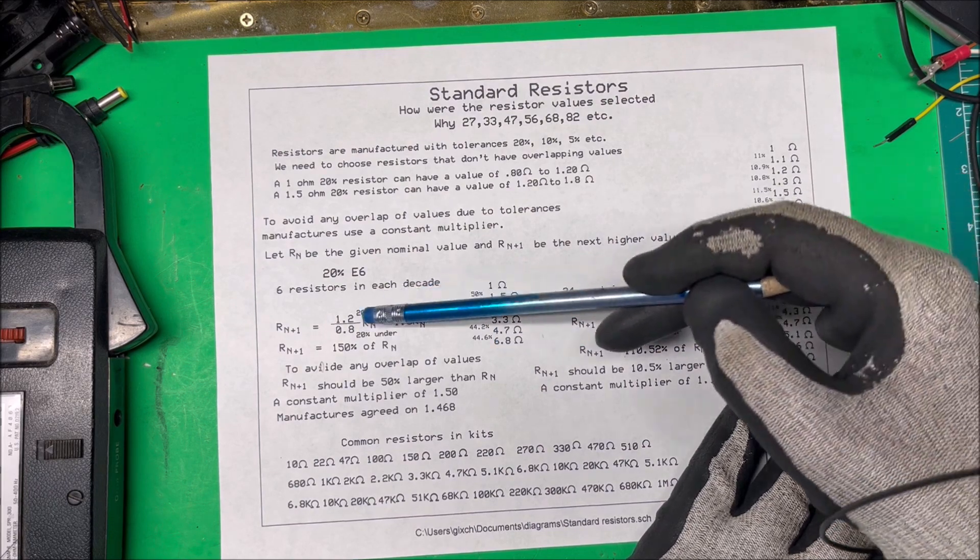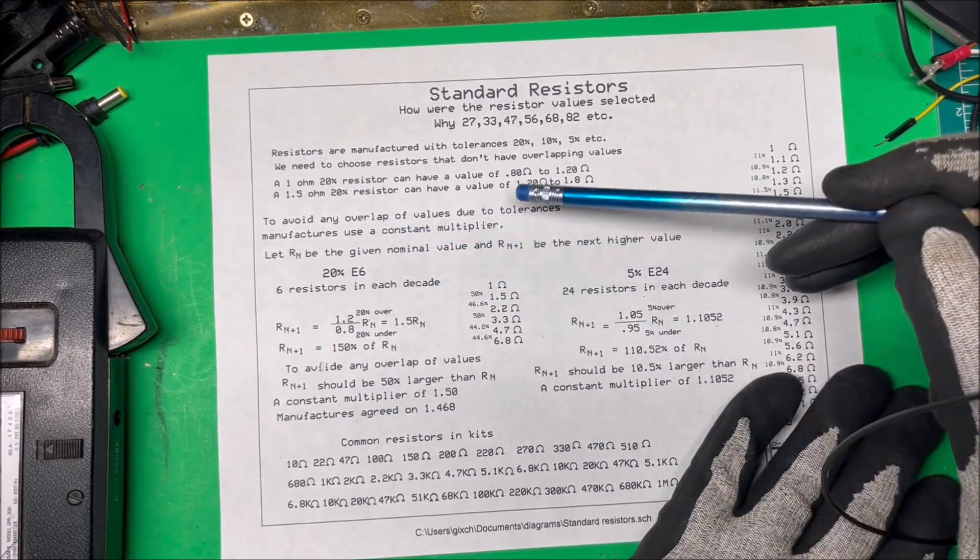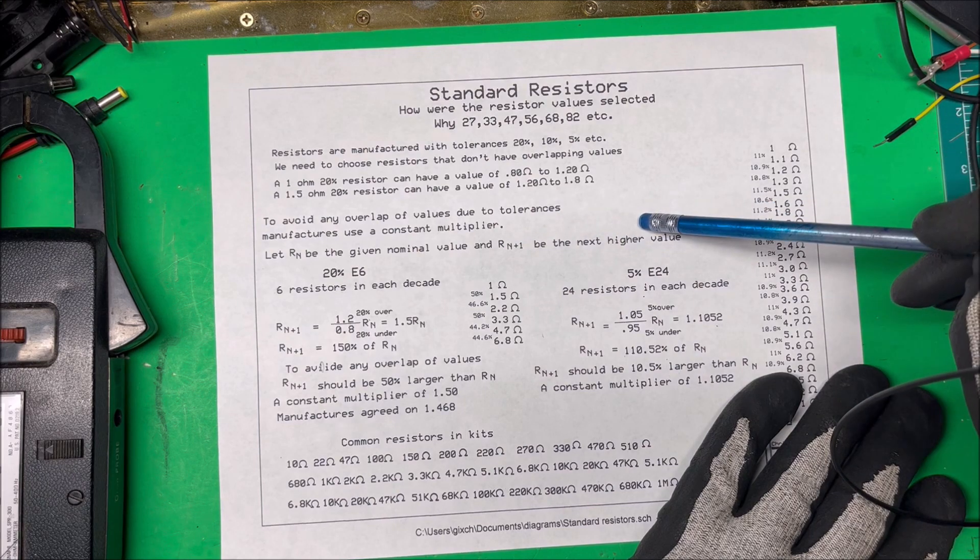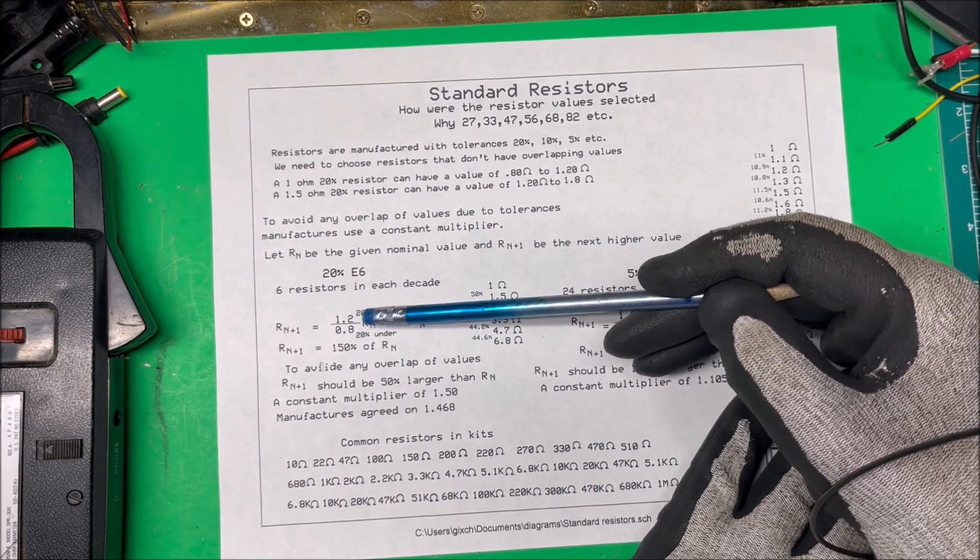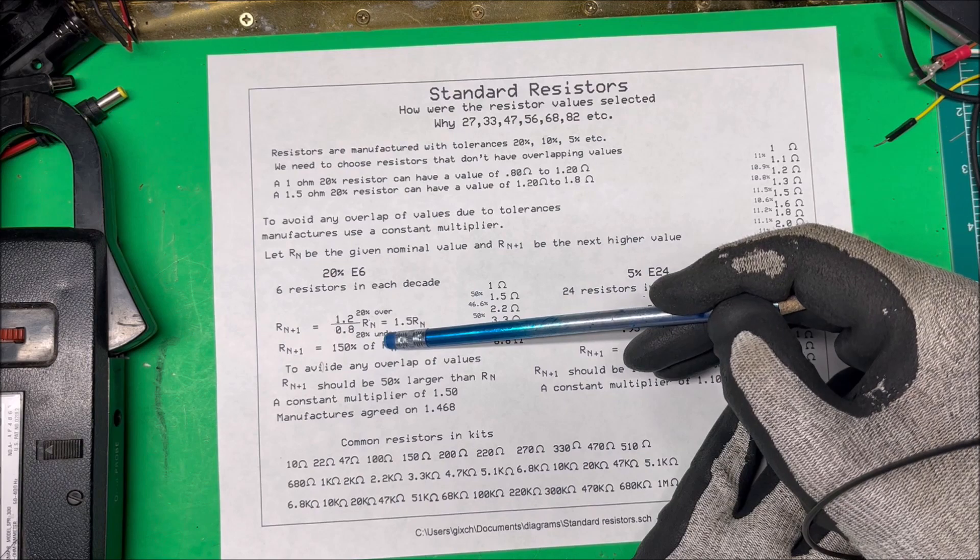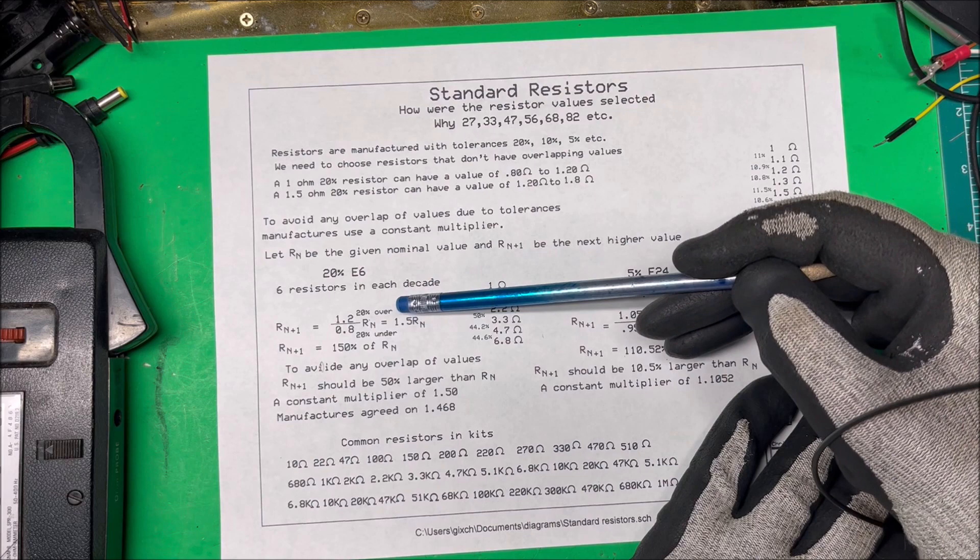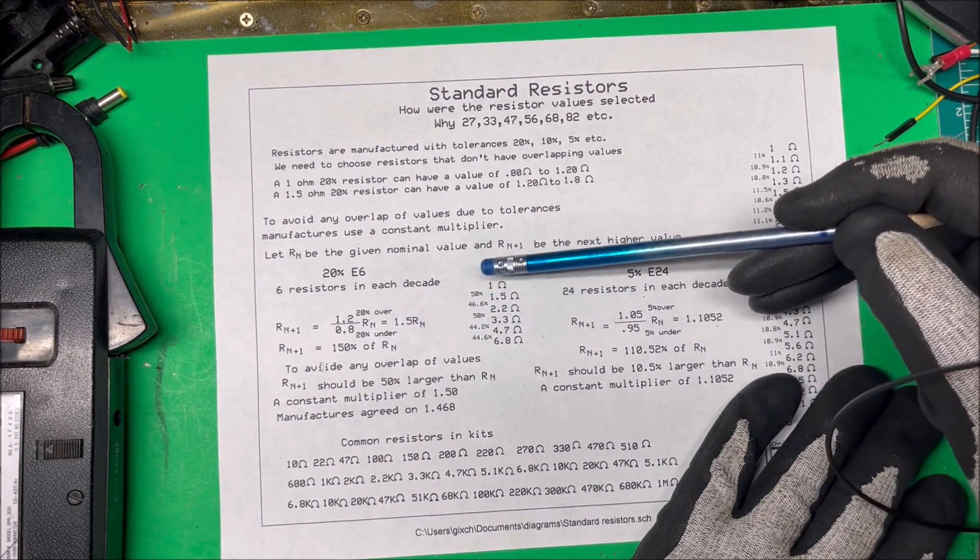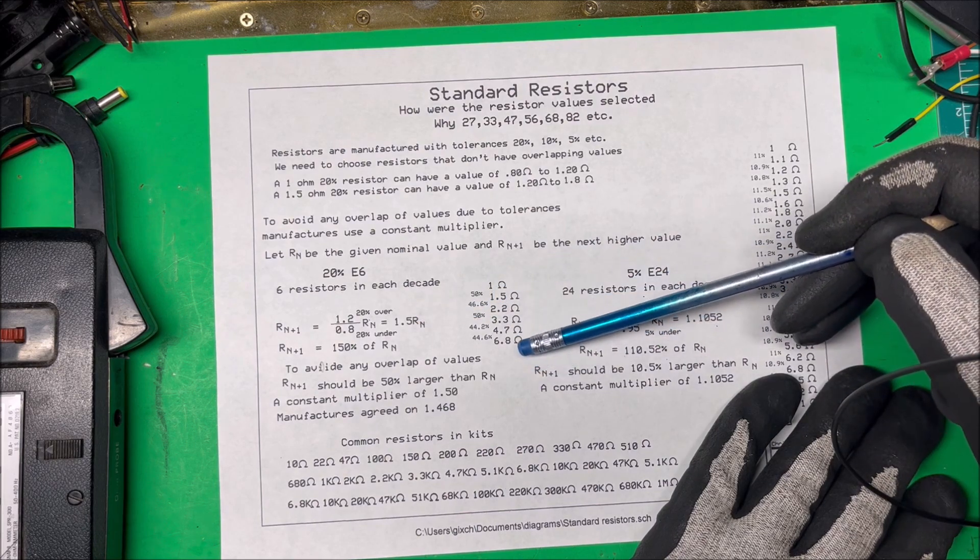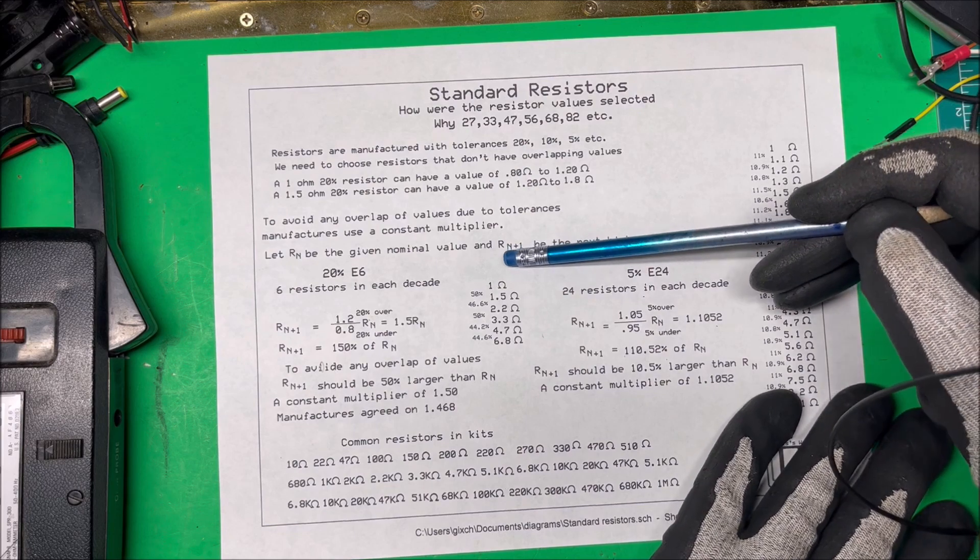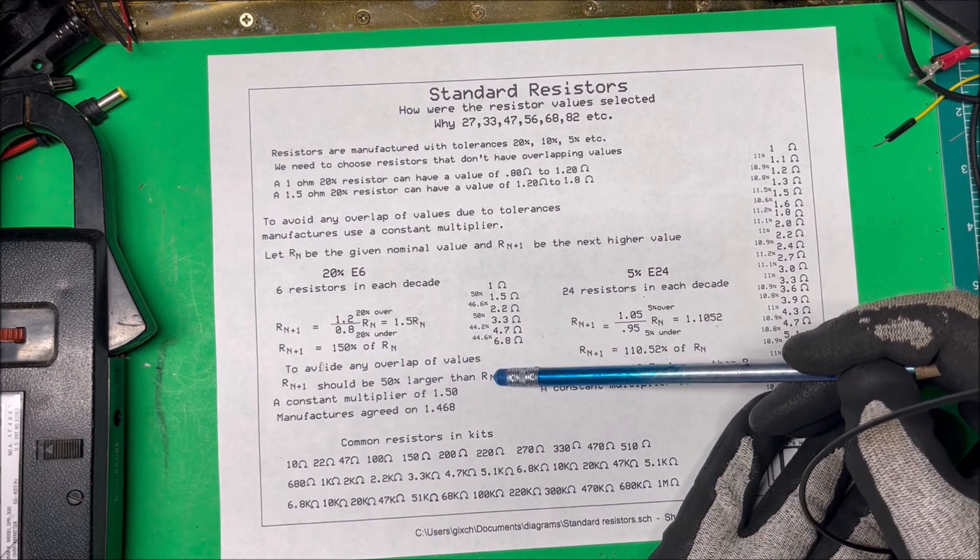To get these numbers they use this formula. Let Rn be the given nominal value and Rn+1 be the next higher value. Rn+1, the next higher value, is going to be equal to 1.2 (which is 20 percent over) divided by 0.8 (which is 20 percent under) times that previous resistor. That's 1.5 times Rn. So if the previous resistor was one and you take 1.5 times it, your next resistor would have to be 1.5 ohms so they wouldn't have overlapping values.